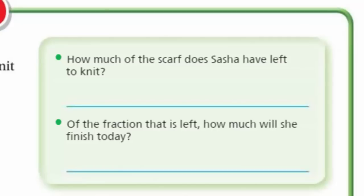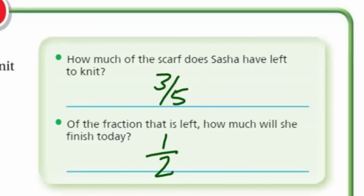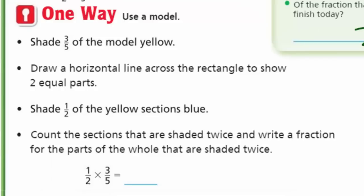I'm liking it, and it shows that we're going to be finding one half of three-fifths. Let's make sure we understand what is being asked. How much of the scarf does Sasha have left to knit? We know it's three-fifths of a scarf left to knit. And of the fraction that is left, how much will she finish today? The problem tells us she finishes one half of that today, so that is one half. One way is to use a model, which is what we're going to be doing today.